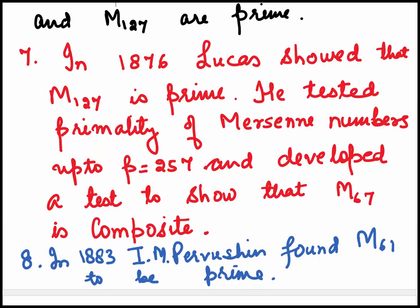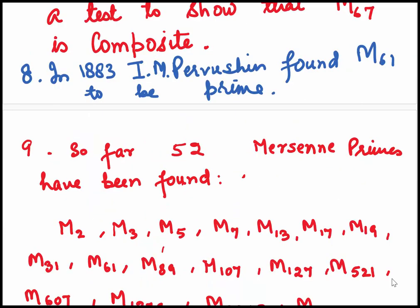In 1876, Lukash showed that M127 is prime. He tested primality of Mersenne numbers for primes up to 257 and developed a test to show that M67 is composite.